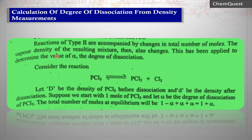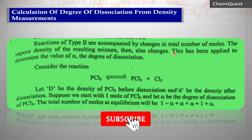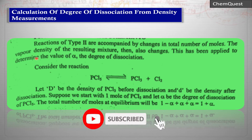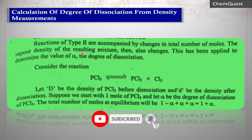In these Type 2 reactions where the number of moles changes, the vapor density of the resulting mixture also changes.